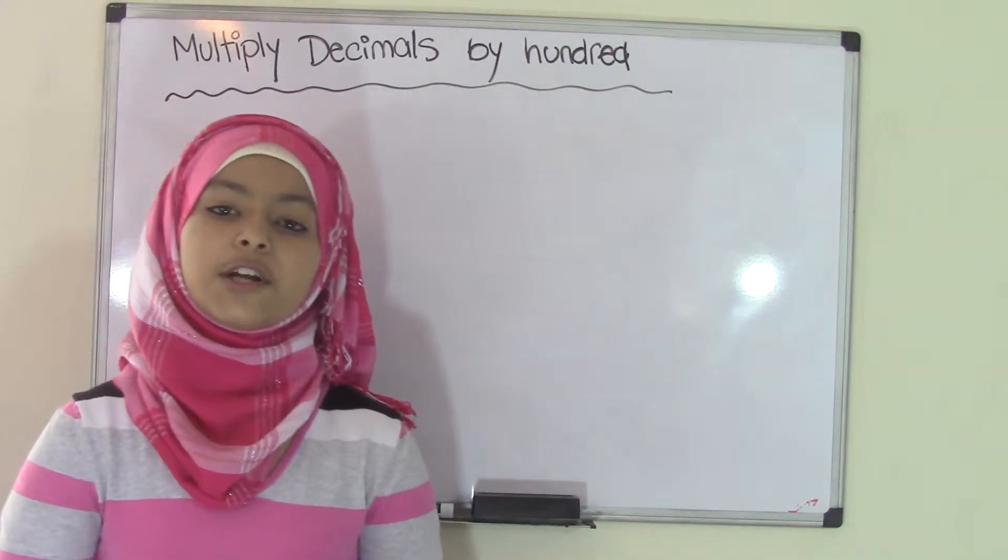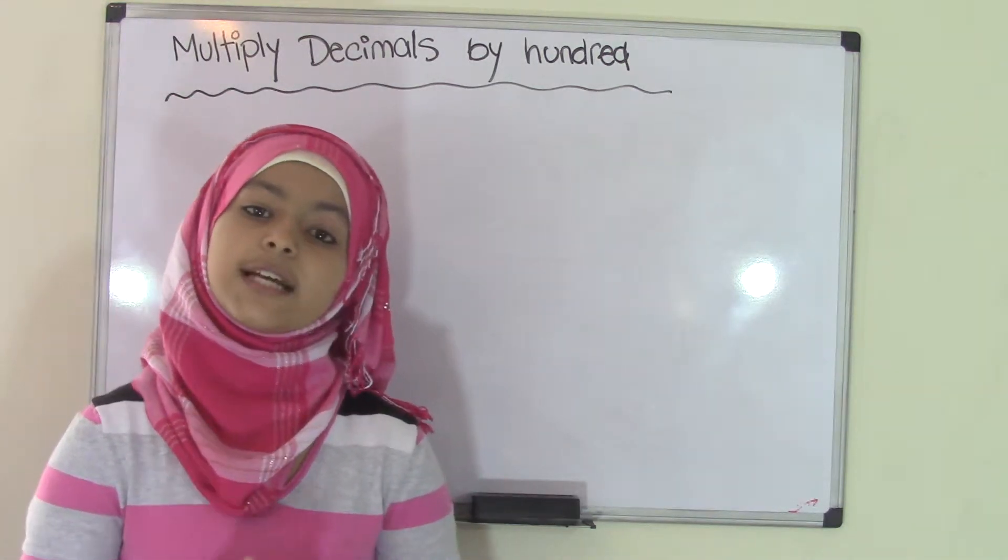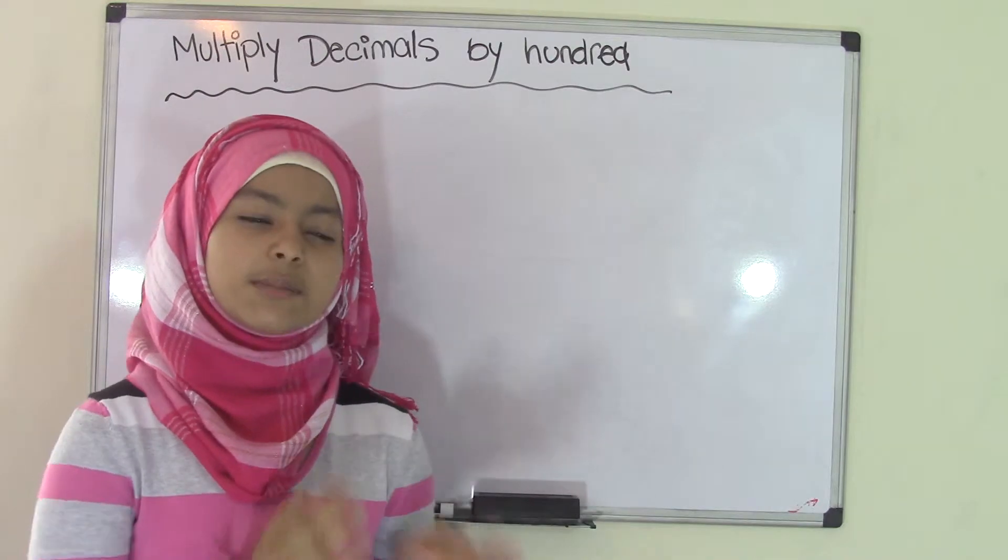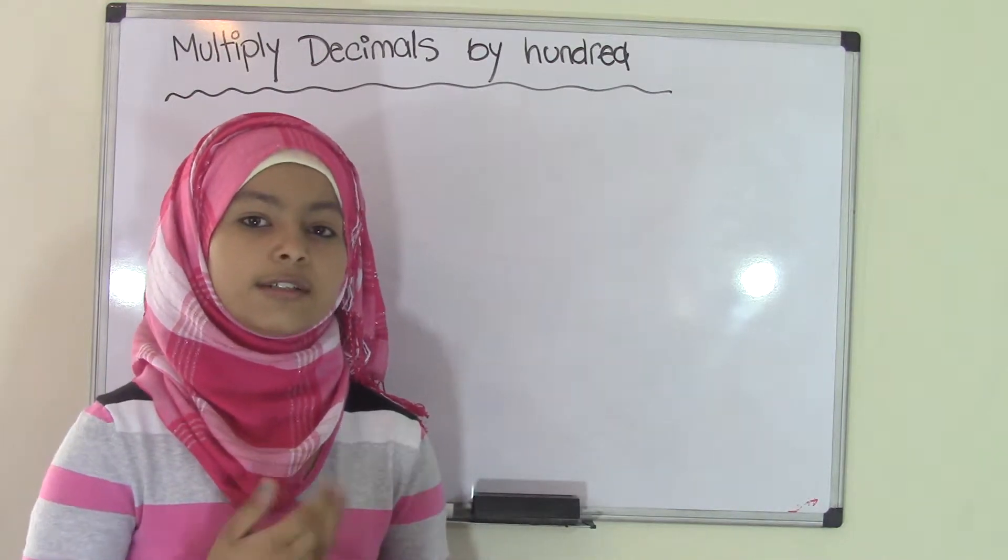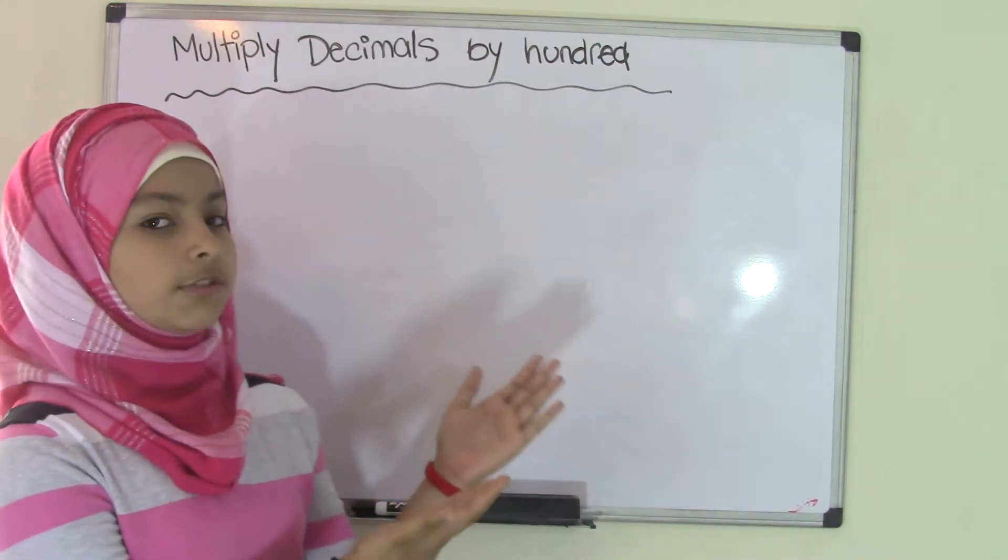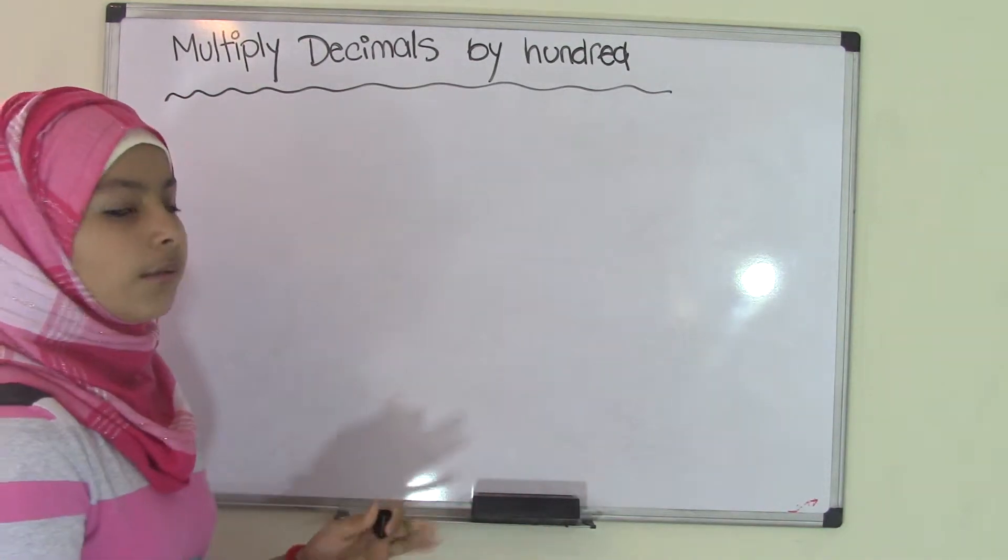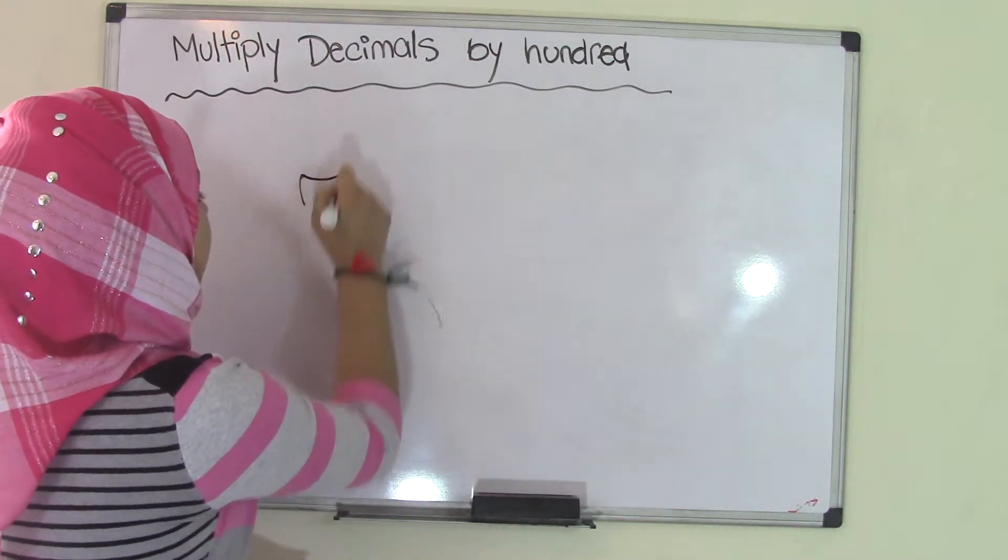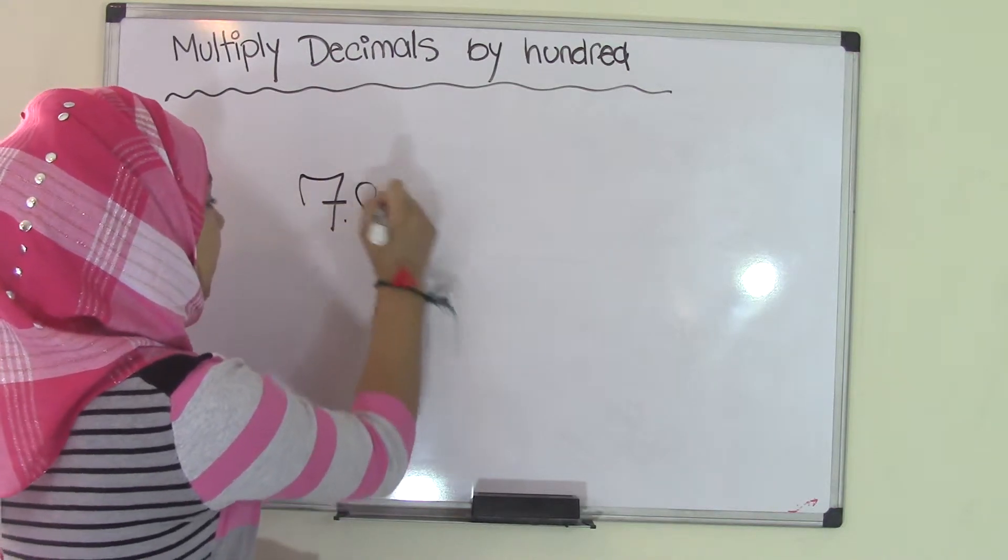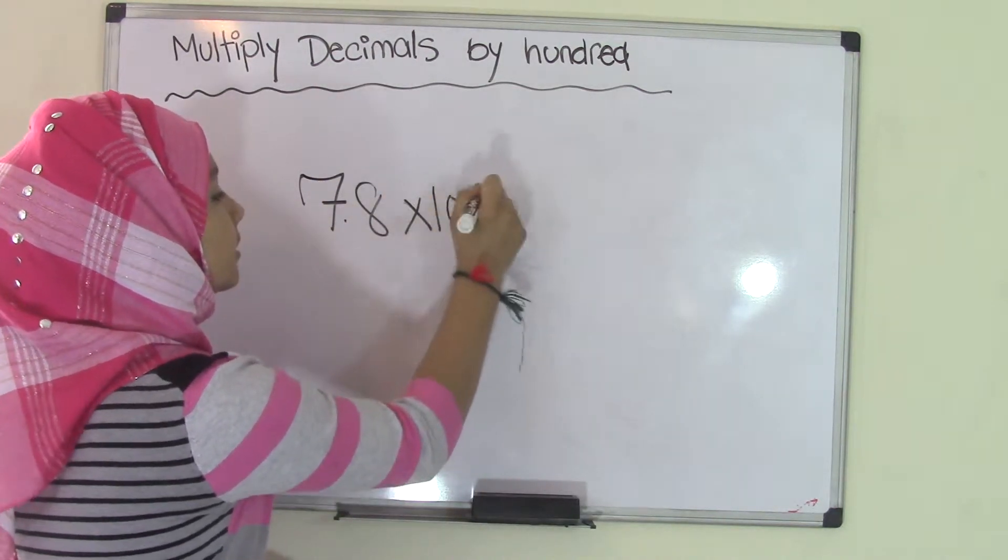If you've seen our previous video it was about multiplying decimals by 10, and this is pretty much the same thing except for our number which is going to be 100. So let's just say to start off we're going to start with a small number, maybe we have 7.8 times 100. As you can see I'm writing this in horizontal form.